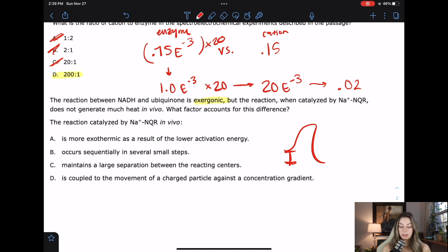This reaction could be exergonic, could be spontaneous, but it could take a thousand years to actually complete. And when you add an enzyme in, it really just speeds things up, but it doesn't actually change the amount of energy that is being released. So when it's catalyzed, it doesn't generate much heat. Now I think an important thing here is that it says in vivo and in vivo means inside the body. It says A the reaction catalyzed by the enzyme in vivo is more exothermic as a result of the lower activation energy. So yes, enzymes do lower activation energy. That is their whole point. But that doesn't make it any more exothermic. Exothermic all has to do with thermodynamics. So no, that doesn't make sense because enzymes don't change thermodynamics.